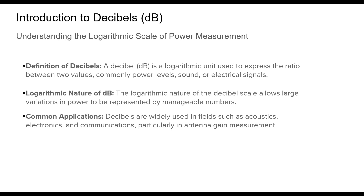The decibel is a logarithmic unit, meaning it represents ratios on a scale that increases or decreases exponentially. This is why decibels are useful in contexts like antenna gain, where signal strength can vary dramatically over distance. Whether we're talking about sound intensity or radio waves, the decibel provides a universal language for comparison.